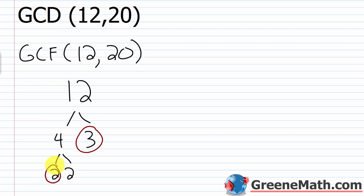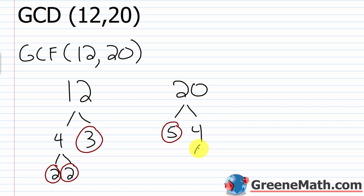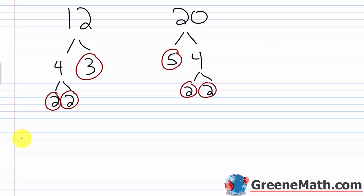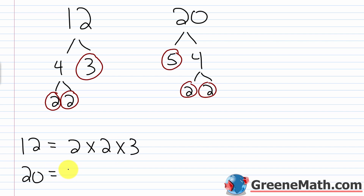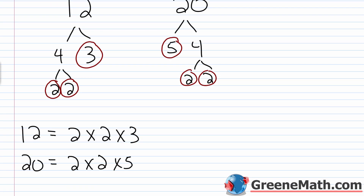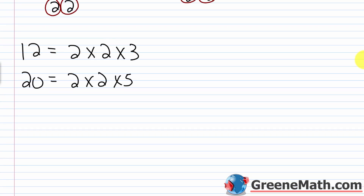Now for 20, I'll start with 5 times 4. Five is prime — circle and stop. Four is 2 times 2, and 2 is prime, so circle both. Now writing out the prime factorizations: 12 is 2 × 2 × 3, and 20 is 2 × 2 × 5. Looking at what's common to both, we have one 2 in common, and a second 2 in common, and nothing else. So our list contains two 2s.